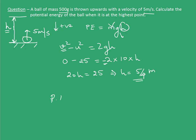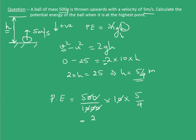Now I calculate the potential energy: mass is 500 grams, which I convert into kg, g is 10 meters per second squared, and height is 5/4. Doing the calculations, the potential energy of the ball is 25/4 joules. From this question, we can easily see how our equations of motion can be related to work and energy. All that has to be done is find the unknown quantity — in this case h — and substitute it in the formula to find the potential energy. These are pretty simple questions.